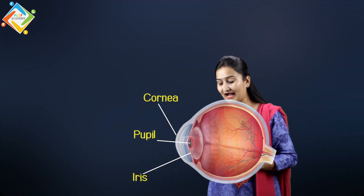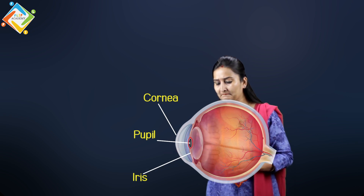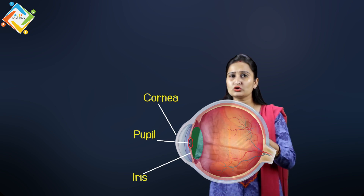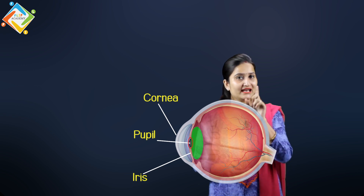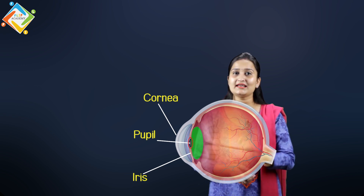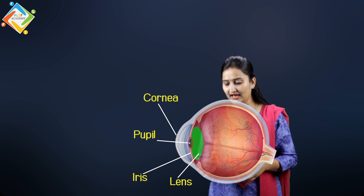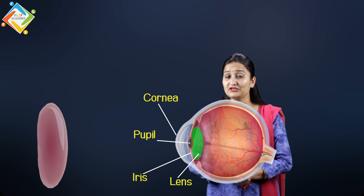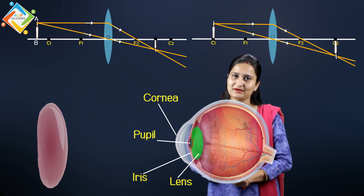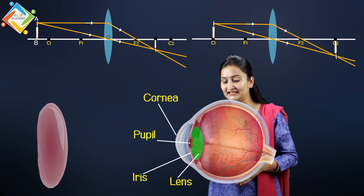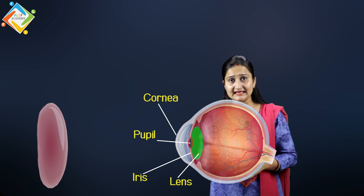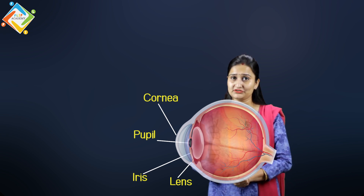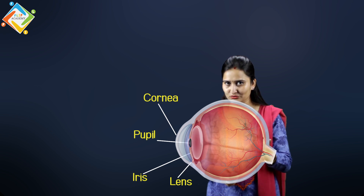Just behind the iris there is a structure called the eye lens — the same type of lens we have studied in spherical lenses. This lens is basically a jelly-like structure. Because of this jelly-like fill, the eye lens can easily contract and expand.